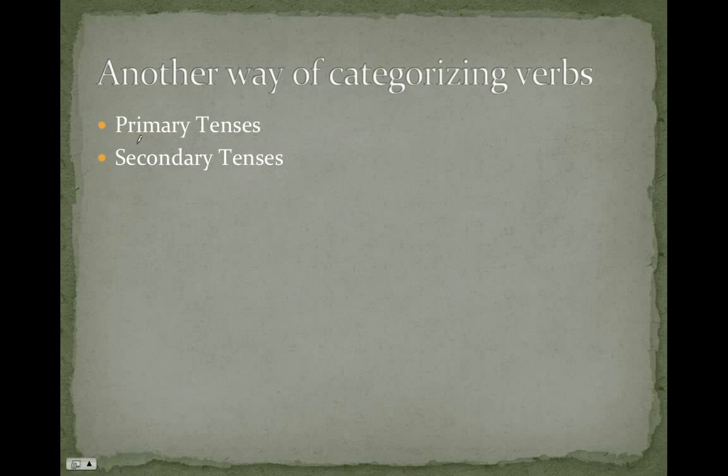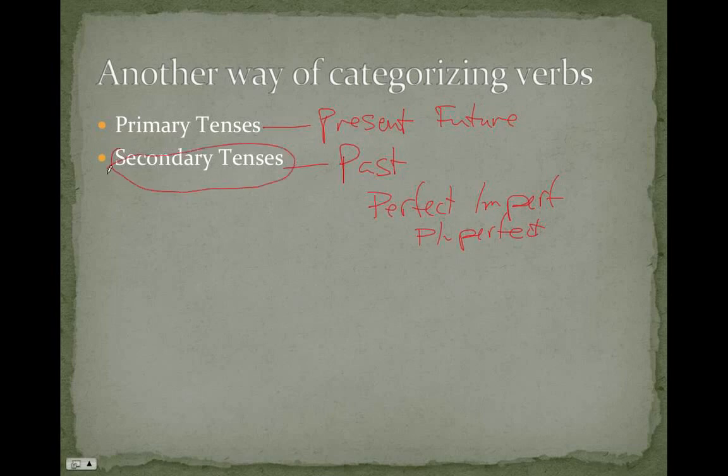And yet another way to categorize verbs are either as primary tenses, and these are going to be our present and future tenses, and our secondary tenses are going to be our past tenses. And our past tenses are perfect, imperfect, and pluperfect. So, keep this in mind, that there is this way of categorizing verbs as secondary tenses, those are the past ones, and primary tenses, those are our present and future tenses.